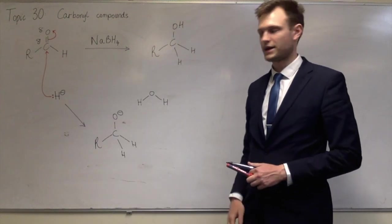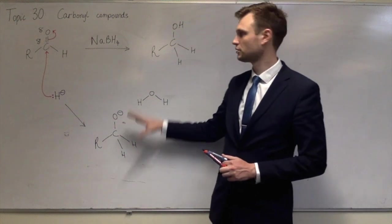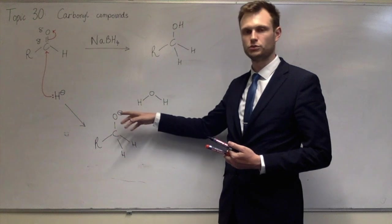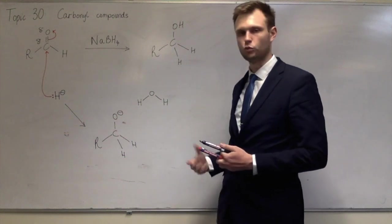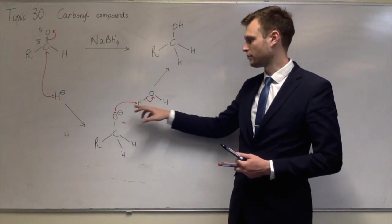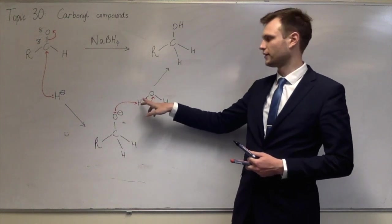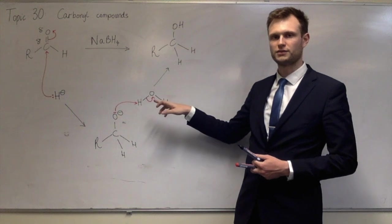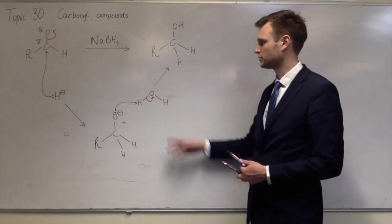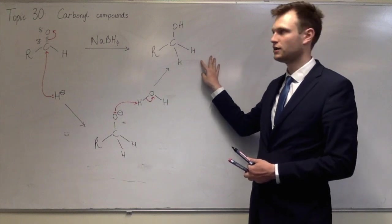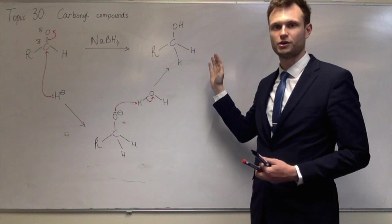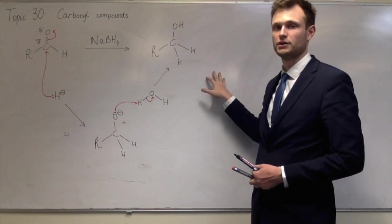The way you'd finish off this reaction to get from this anion to the product is just to heat it with water. The minus will take an H+ from water. That would be a lone pair on the oxygen minus, making a bond with this hydrogen. The bond with hydrogen and oxygen breaks, leaving OH- as well. So if we're going to be completely correct, we still have OH- over here and NaBH3+. It reacts very similar if it is a ketone.